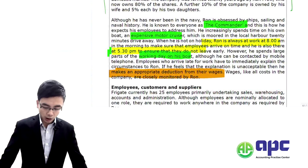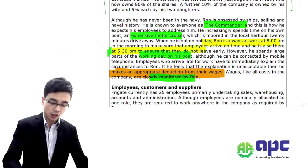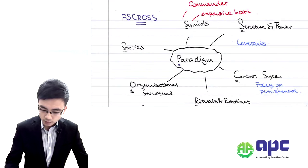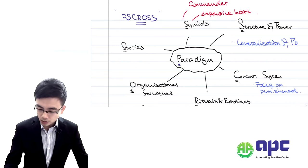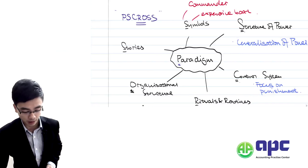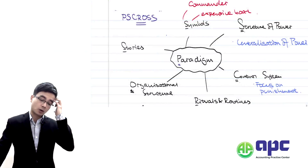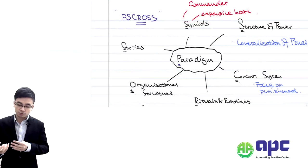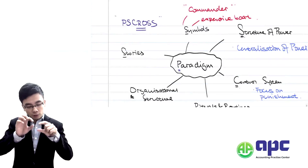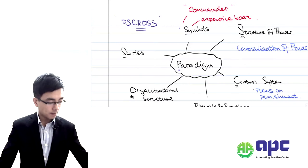Wages, like all other costs in the company, are closely monitored by Ron. Because this is a family-based company, the power structure is centralised by Ron. He decides how much to pay and when to punish employees. And since employees are allocated to roles but required to work anywhere as directed by Ron, that further demonstrates centralisation of power — Ron controls wages, deductions, and where people work.